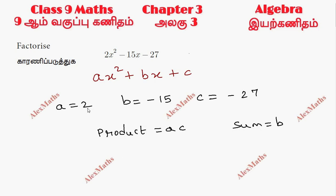If you look at A and C, A times C equals minus 54, and sum of the values minus 15.